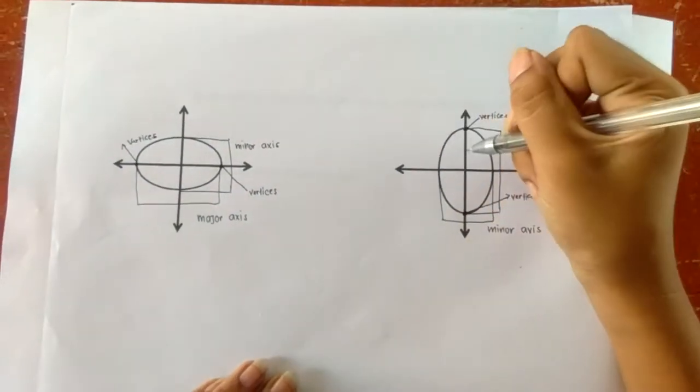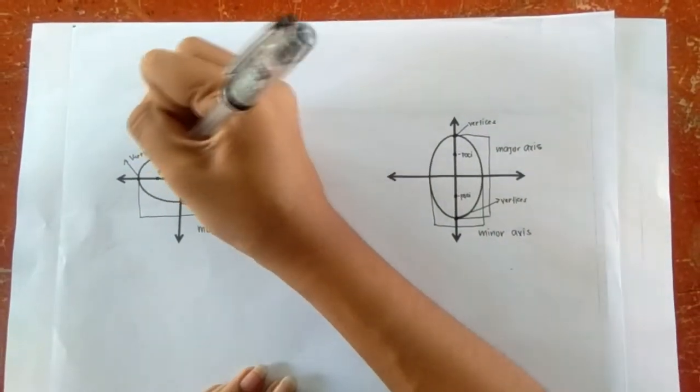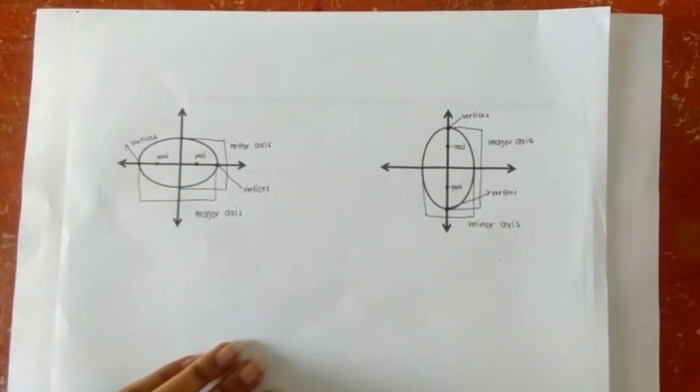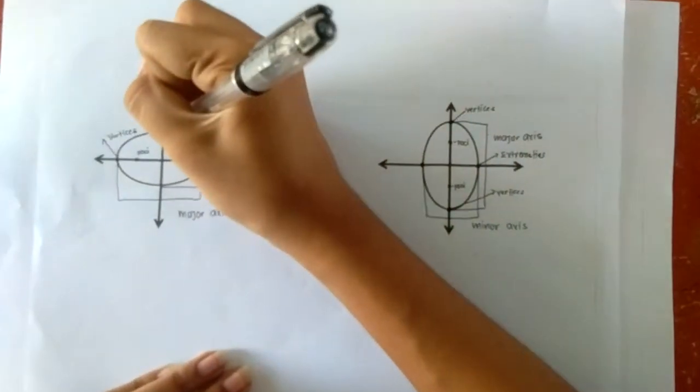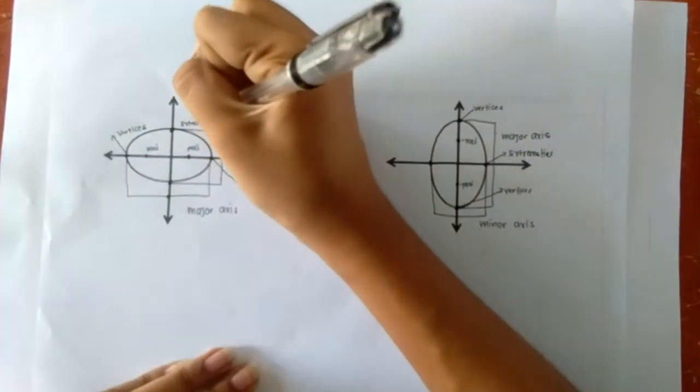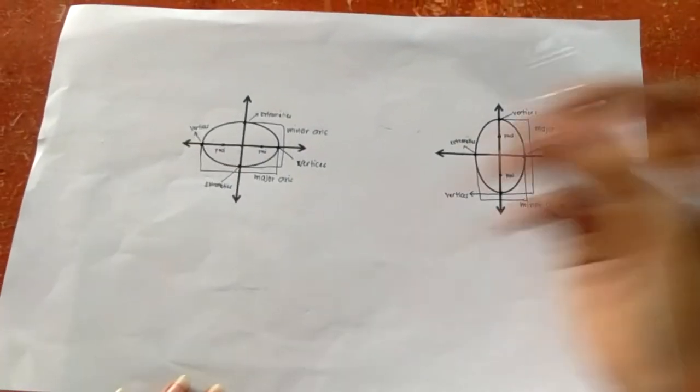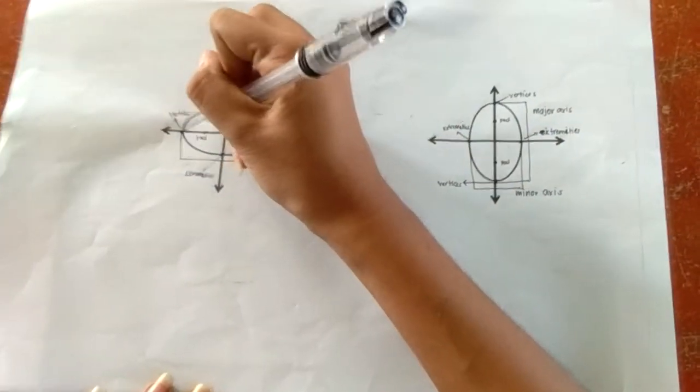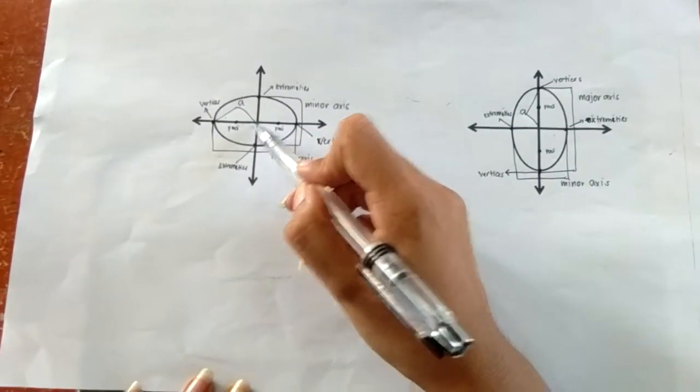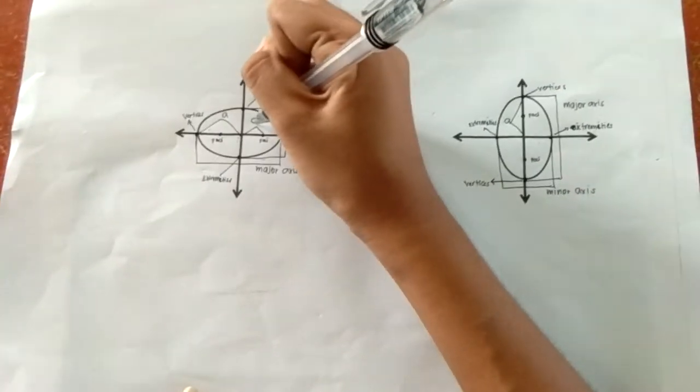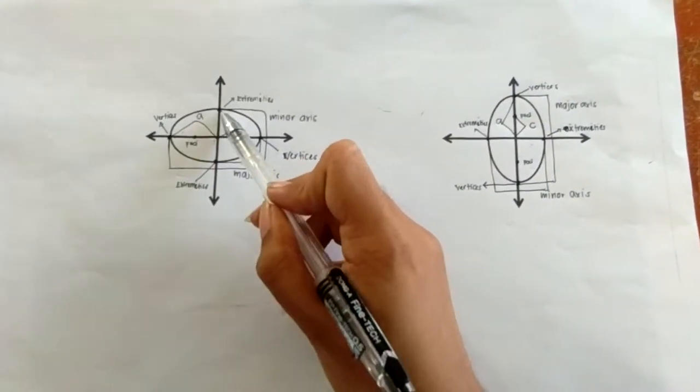We also have our foci and extremities that lie along the minor axis. The distance from the center to the vertices is denoted with A, the distance from the center to the foci is denoted with C, and the distance from the center to any of the extremities is denoted with B.